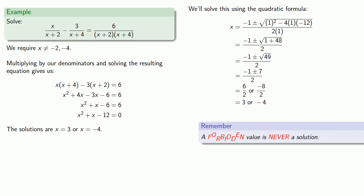But remember that a forbidden value is never a solution. And we require that x was not equal to negative two and not equal to negative four. And so that means this solution, x equals negative four, is extraneous and should not be included in our final answer.